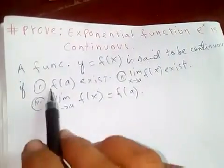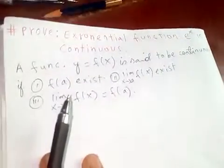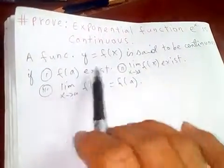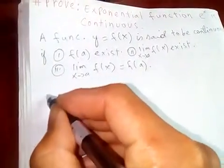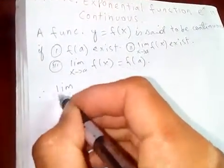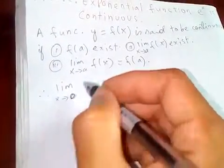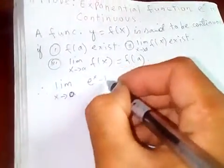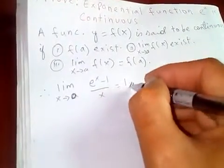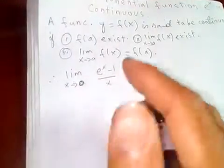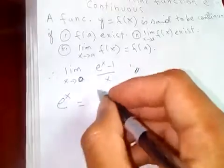So these are the three conditions for a function to be continuous, and we are going to apply all of them. We know that the limit as x tends to zero of e to the x minus one over x is equal to one. And e to the x can be written in this form if we want.